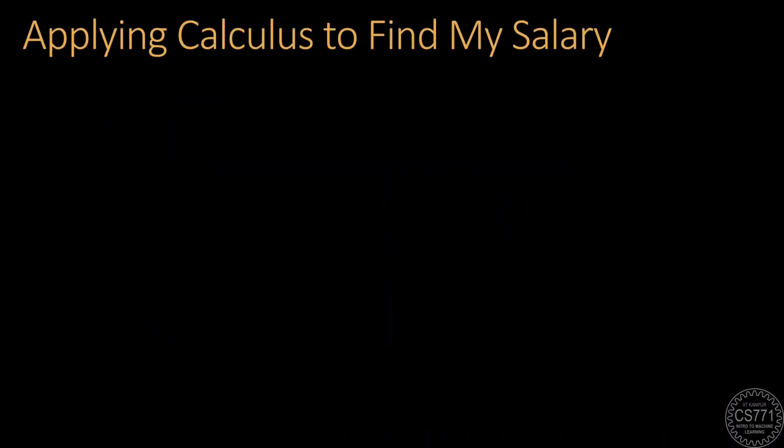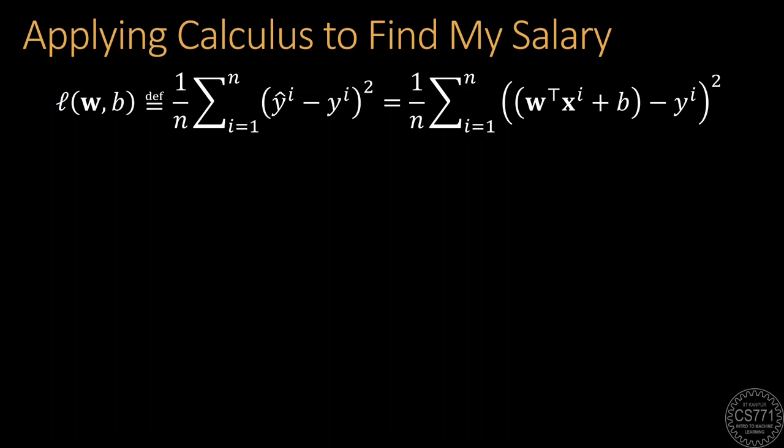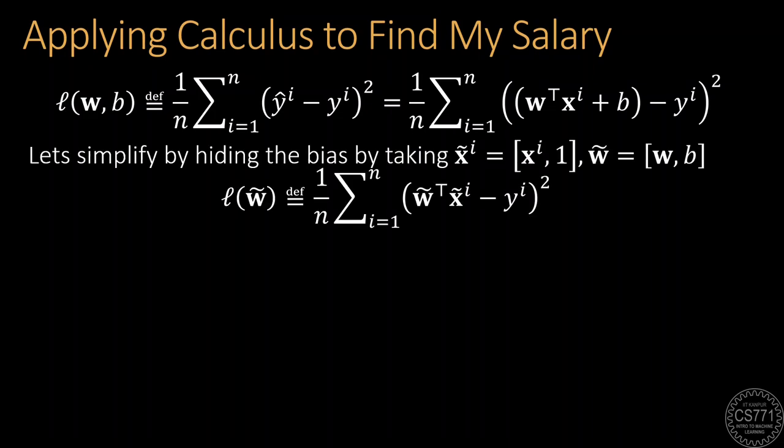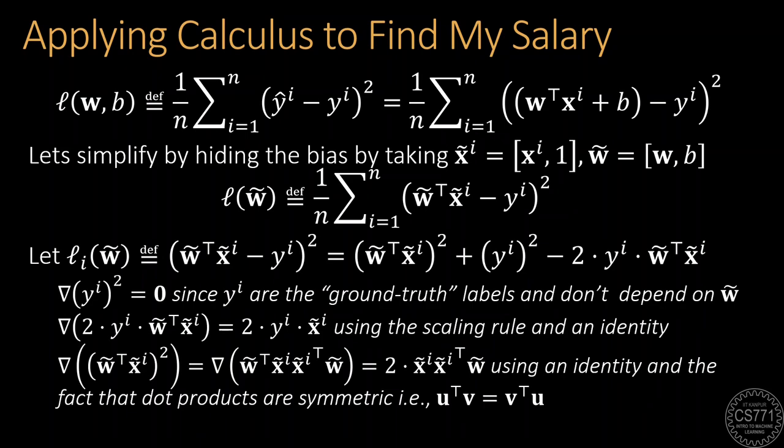Before we wrap up, let us use these techniques that we have gathered today to solve the salary prediction problem we saw at the beginning of this discussion. Recall that we are using a linear model here to predict the salary of individuals. Let us use a squared loss function to learn the parameters of the linear model since the loss function is differentiable. First, we simplify the problem by hiding the bias term inside the model vector itself. Next, we compute the gradient with respect to a single term of the loss function. Recall that loss functions are usually averaged over all training points so that the learnt model does well on all points in general. Using simple applications of the rules and identities that we have just seen, we are able to compute the gradient.